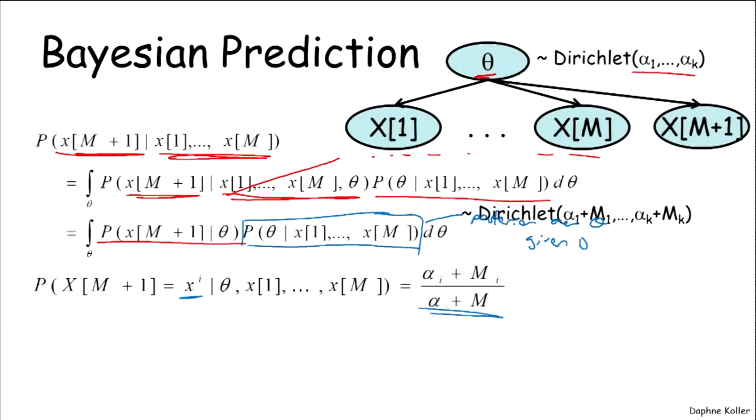Where again, just to introduce notation, alpha is equal to the sum of the alpha i's and m to the sum of the mi's.